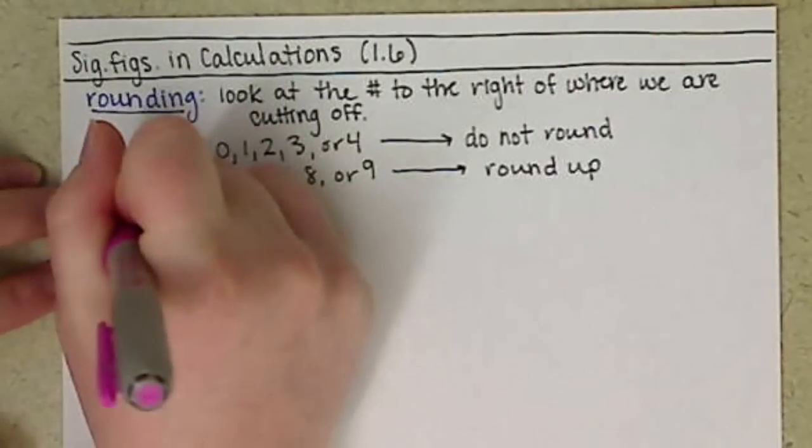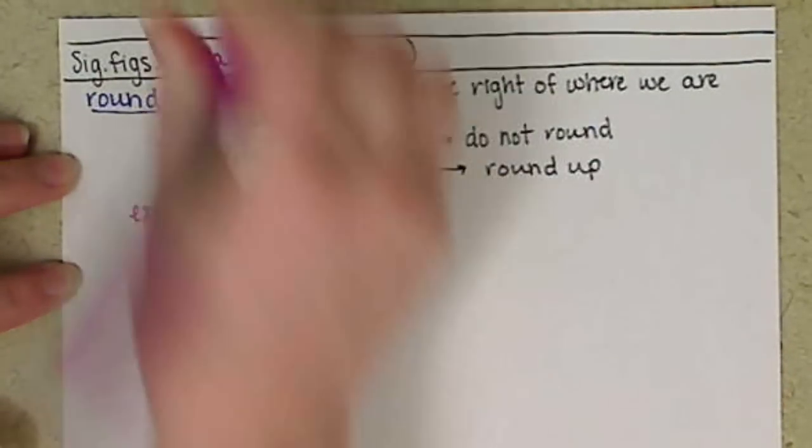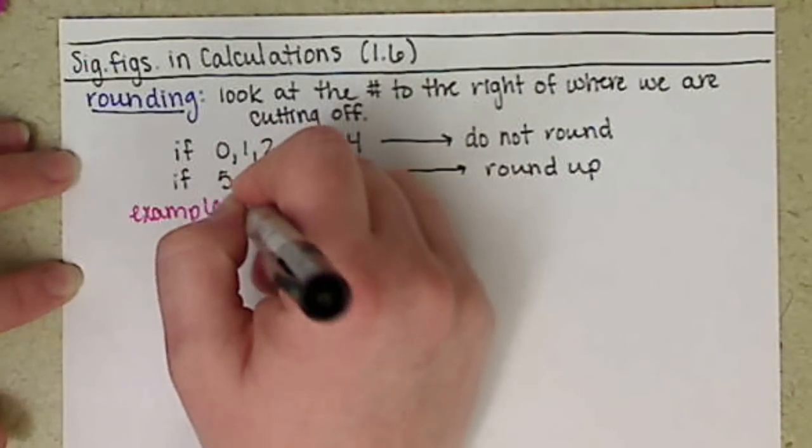So if we look at an example, we want to rewrite the following numbers to three significant figures.